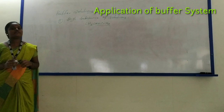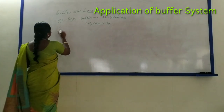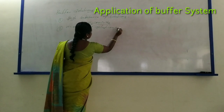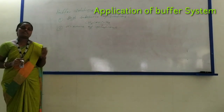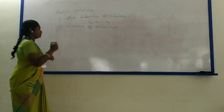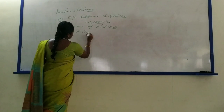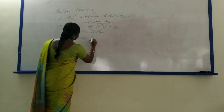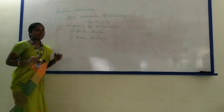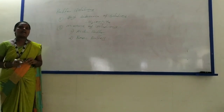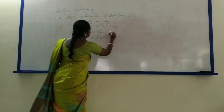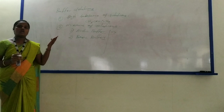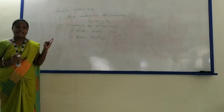Next we move on to the mixture of solutions, which is the second category. It is further classified into two types: the first one is acidic buffer and the next one is basic buffer. First we move on to the topic of acidic buffer and its action. Acidic buffer contains one weak acid and its conjugate base from a strong base of the same substance. That is known as acidic buffer.